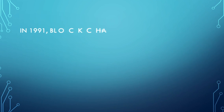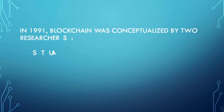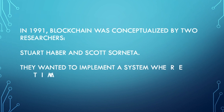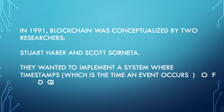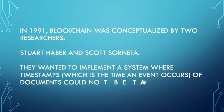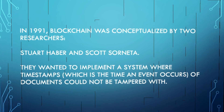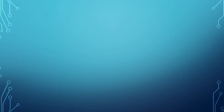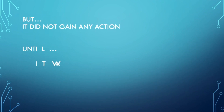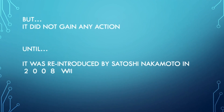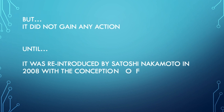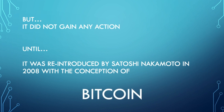In 1991, blockchain was conceptualized by two researchers, Stuart Haber and Scott Stornetta. They wanted to implement a system where timestamps — which is the time an event occurs — of documents could not be tampered with. But it did not gain any traction until it was re-introduced by Satoshi Nakamoto in 2008 with the conception of Bitcoin.